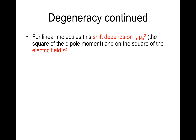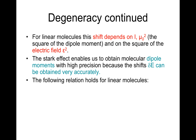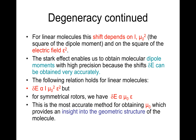For linear molecules, this shift depends on the moment of inertia I, the square of the dipole moment μ₀², and the square of the electric field η². The Stark effect enables us to obtain the molecular dipole moment with high precision, because the shift delta E can be obtained very accurately. The relation for linear molecules is delta E proportional to I·μ₀²·η², but for symmetrical rotors, delta E is proportional to μ₀·η. This is the most accurate method for obtaining μ₀, providing insight into the geometric structure of molecules.